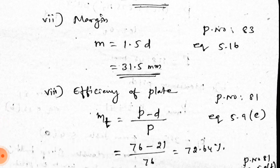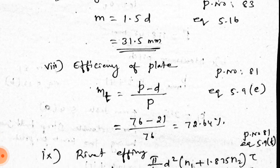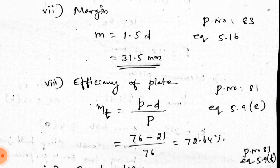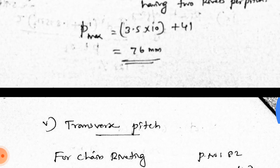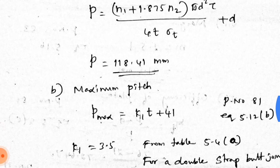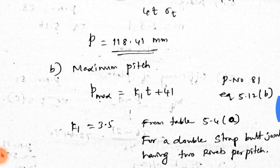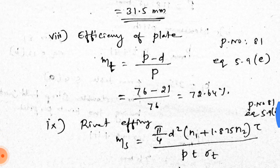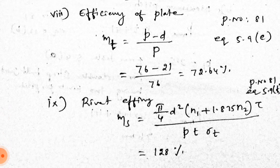Next is the efficiency of the plate. The formula is: efficiency_t = (P − D) / P, from page 81, equation 5.9E. We compare the optimum pitch (118.41 mm) and maximum pitch (76 mm), and select the minimum value. Since 76 is less than 118, the pitch used is the minimum. The calculated pitch is 72.64 mm.